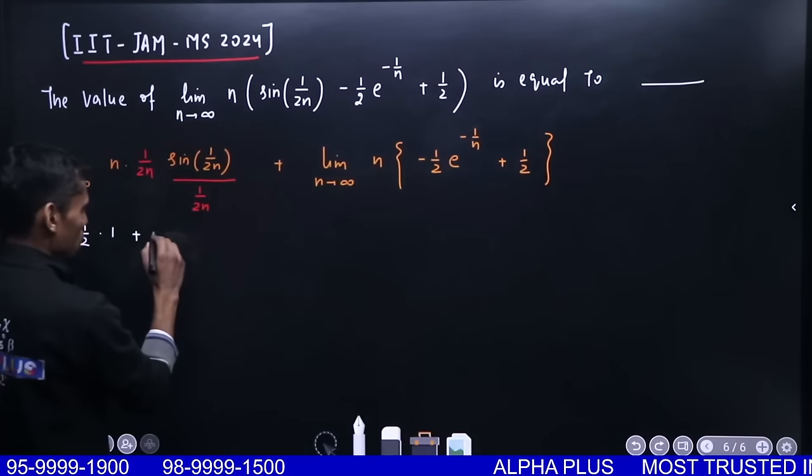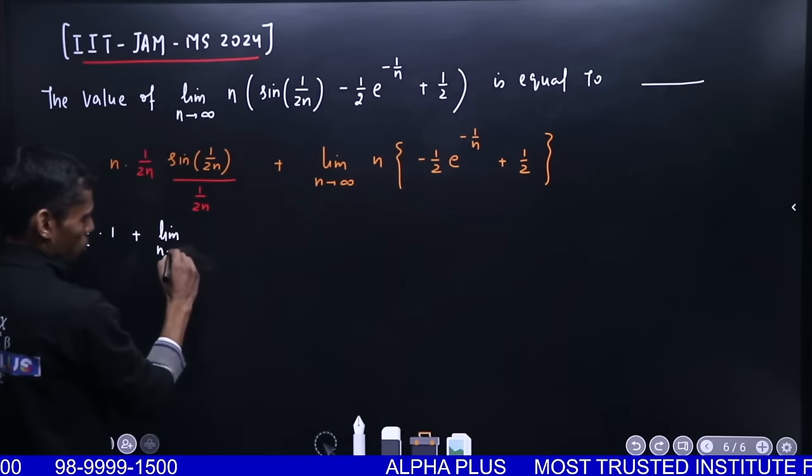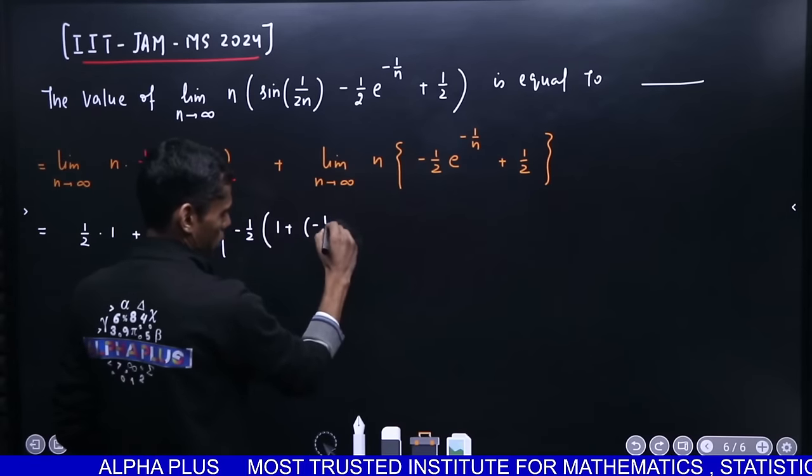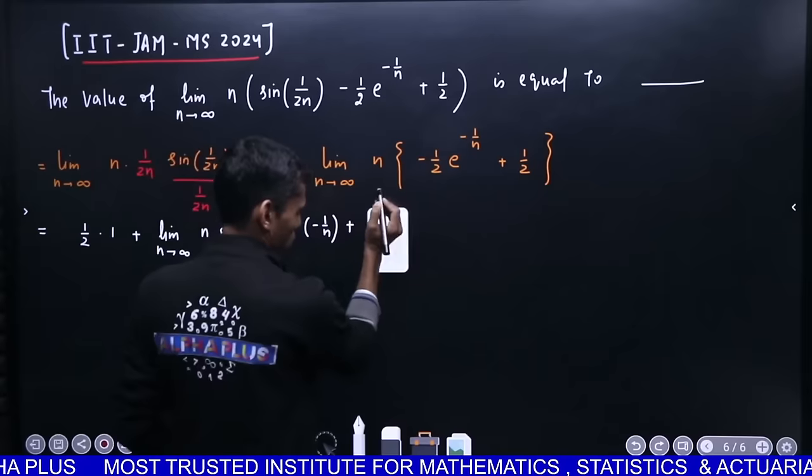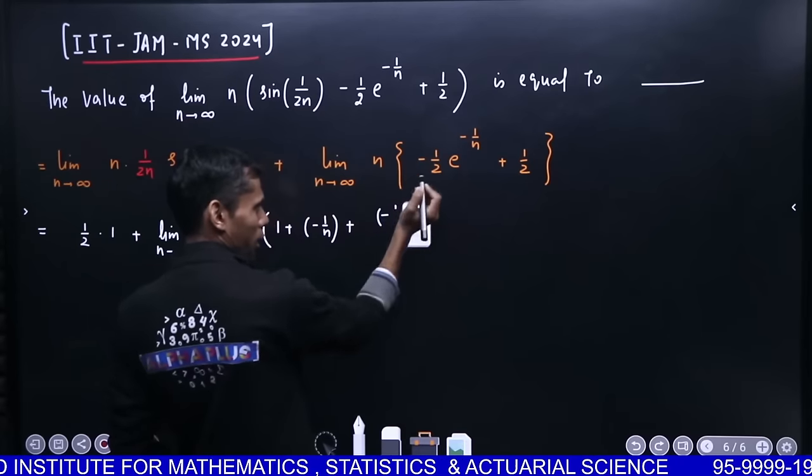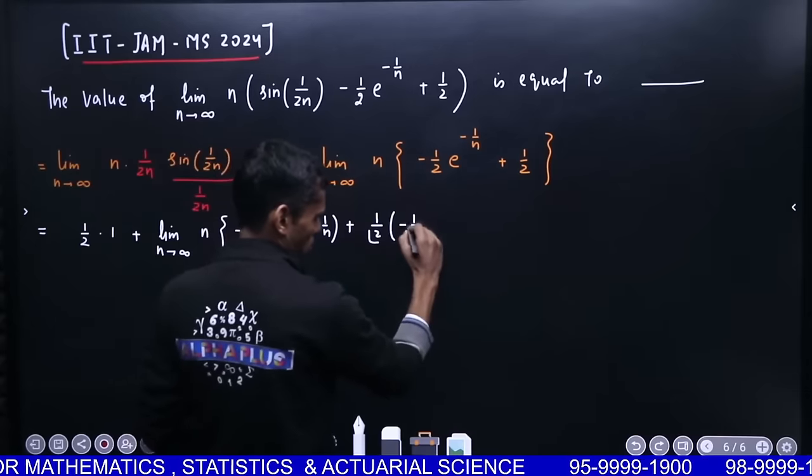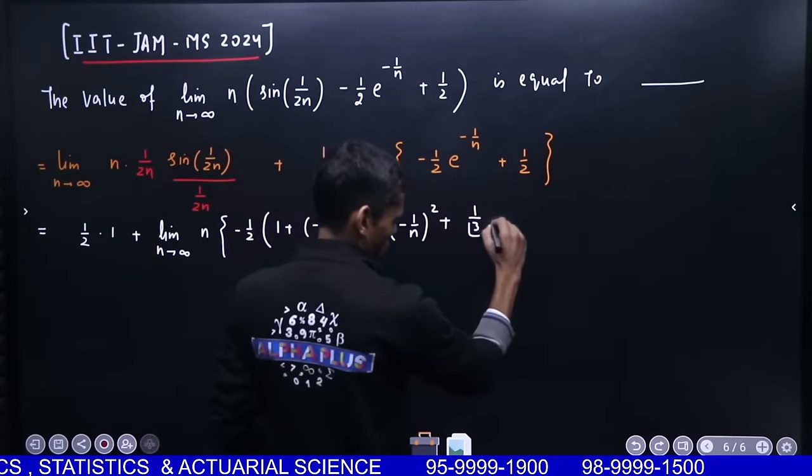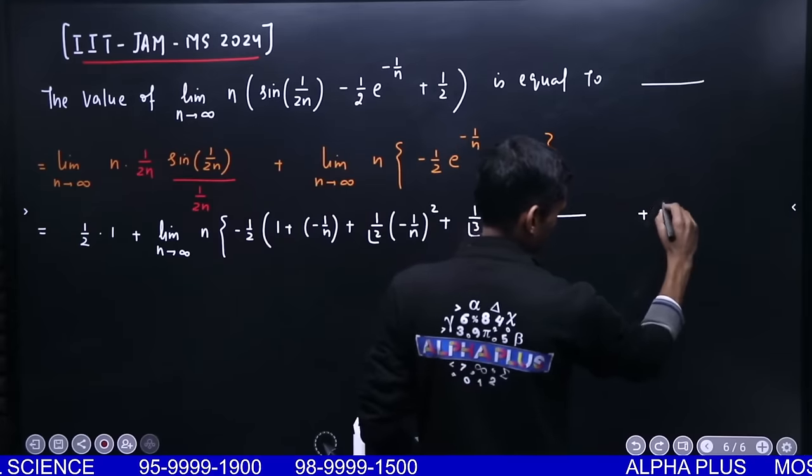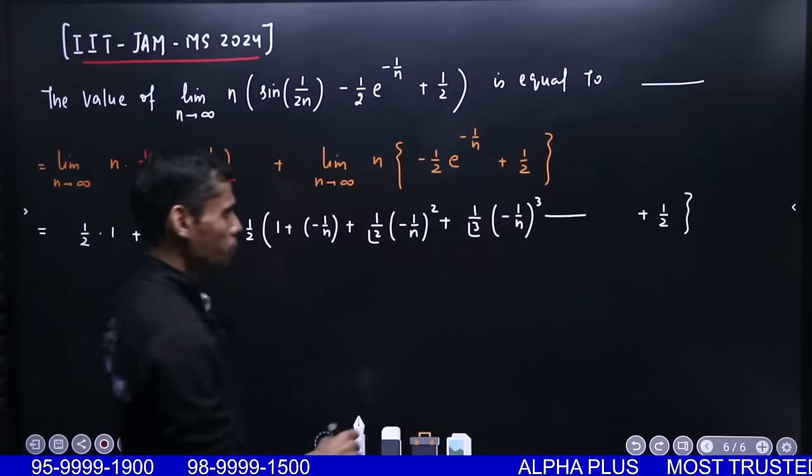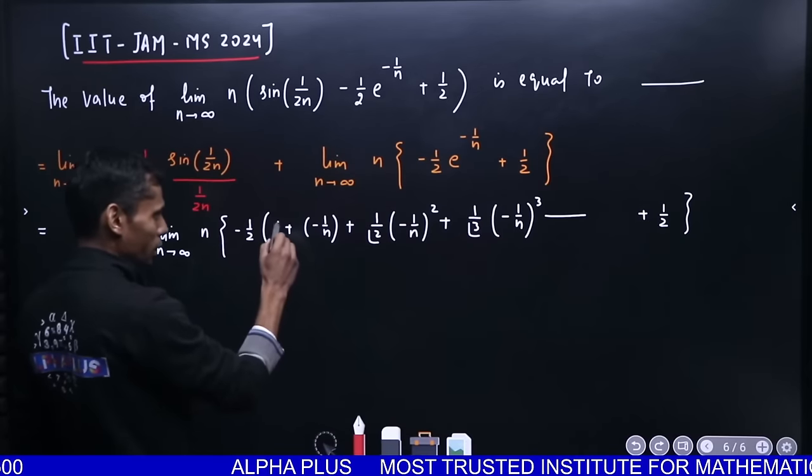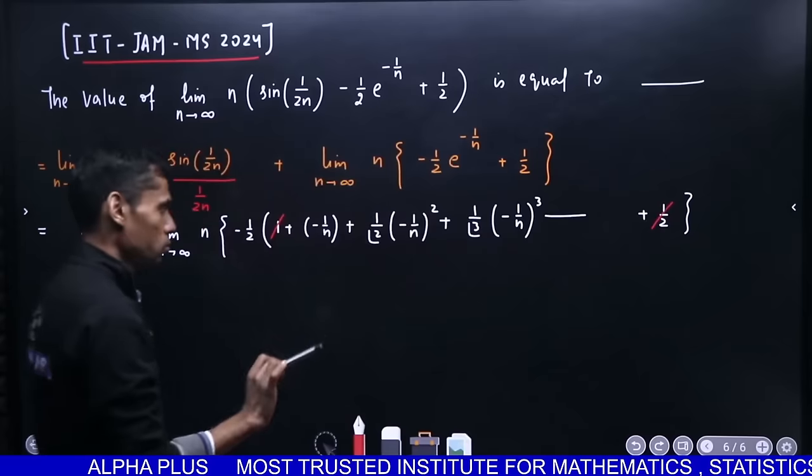So this will be, let me write from here: limit n goes to infinity, and -1/2 as it is. 1 plus x plus x²/2! plus x³/3!. If you are careful enough, this is -1/2 and this is +1/2, I think it will cancel. So I will cancel this one from here. It will cancel.